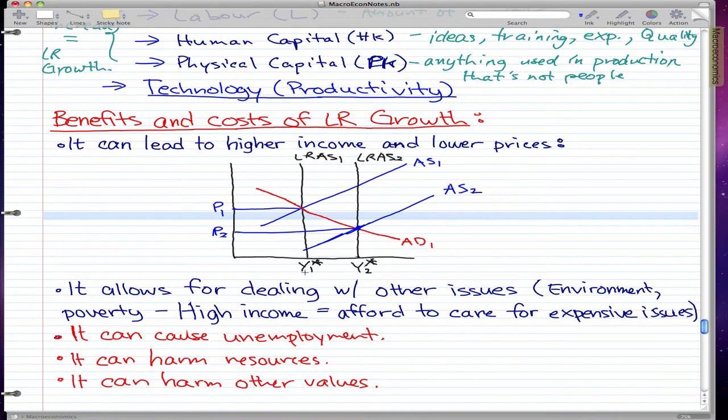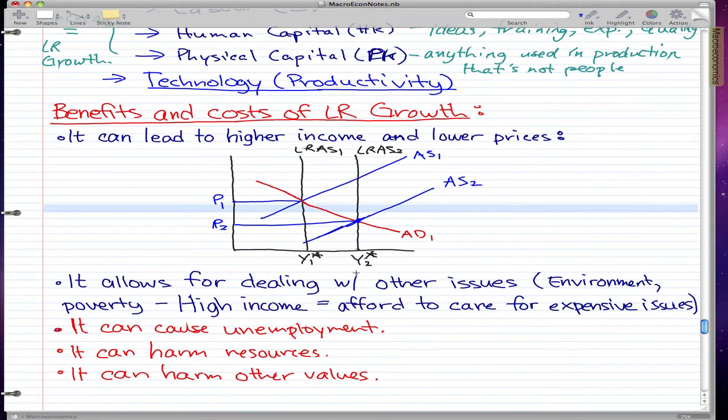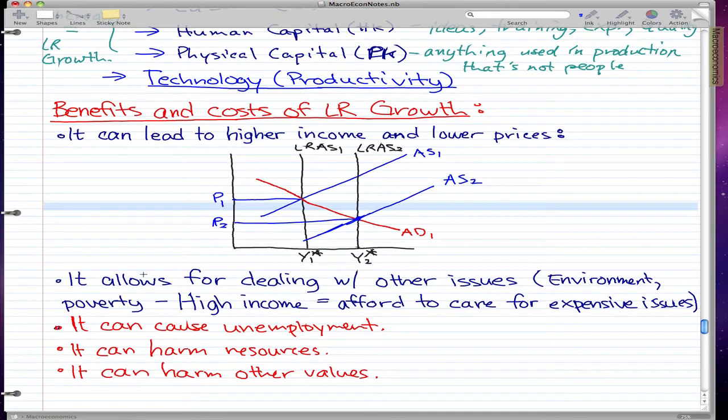the equilibrium changed from Y1 star to Y2 star. A second benefit is it allows for dealing with other issues: environment and poverty are some of the issues we can deal with. Because we have higher income, we can afford to care about these expensive issues.